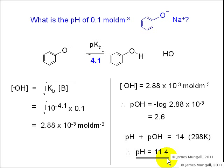This should seem like a reasonable answer since we have calculated the pH of a weak base, which you would expect to lie in the region between 7 and 14.